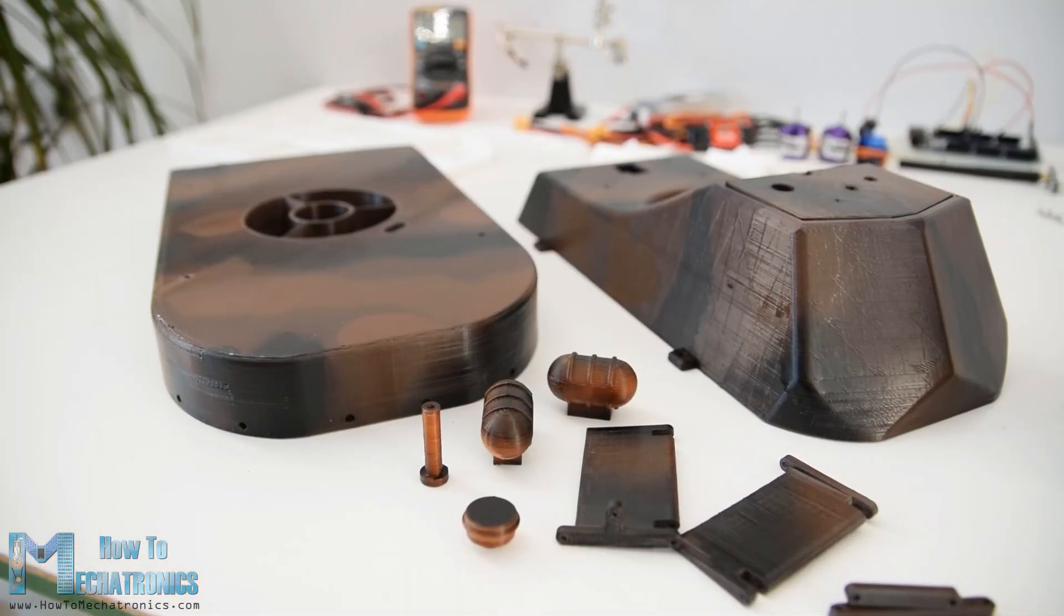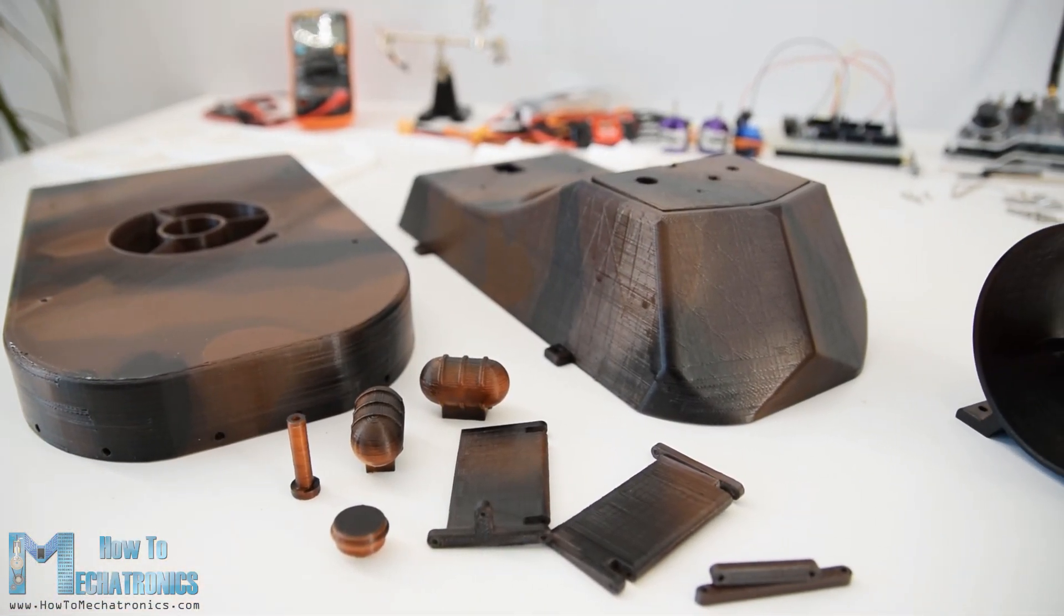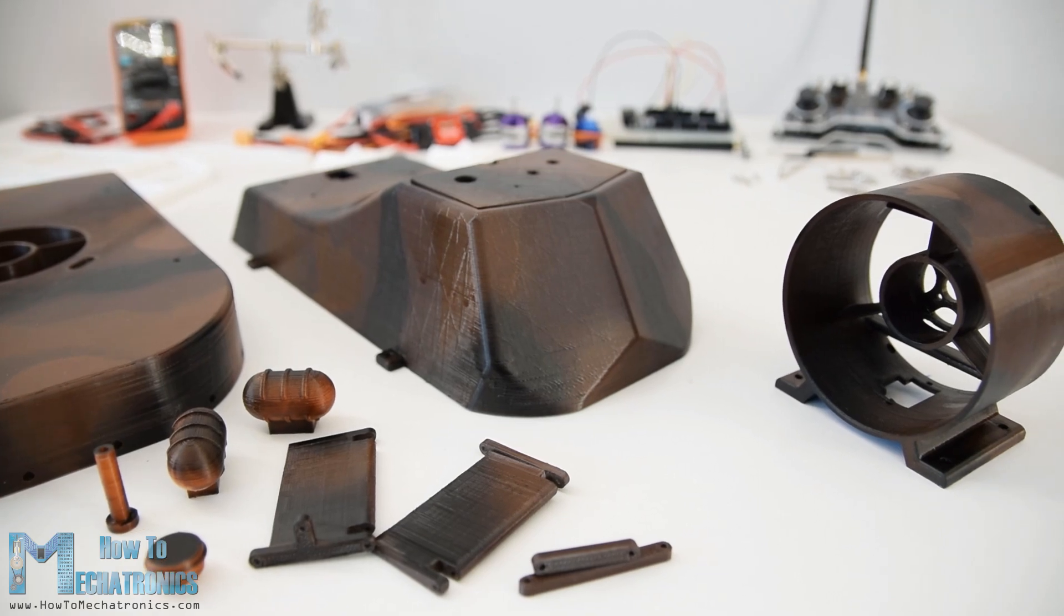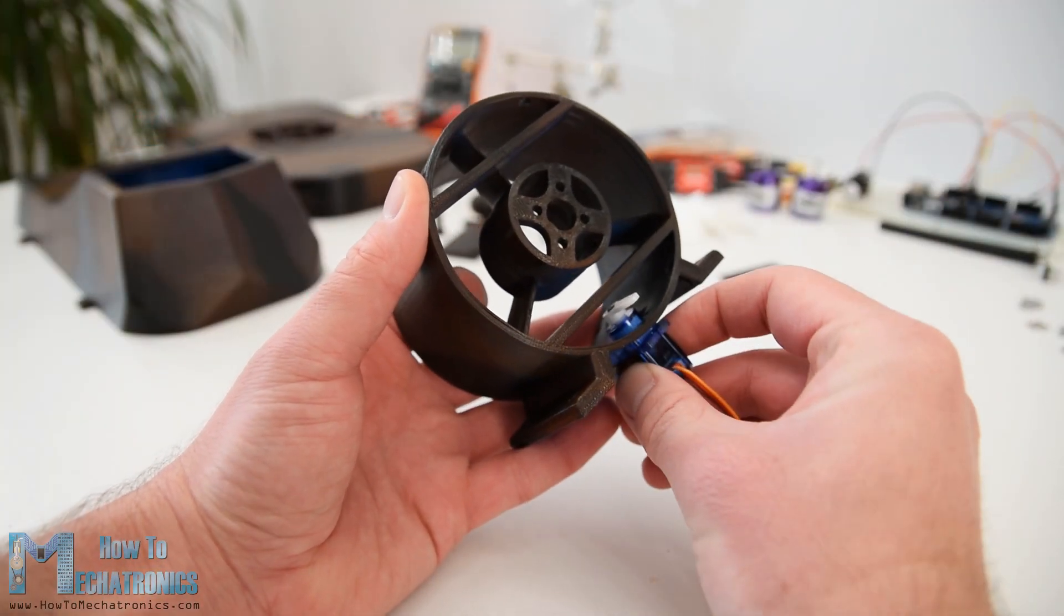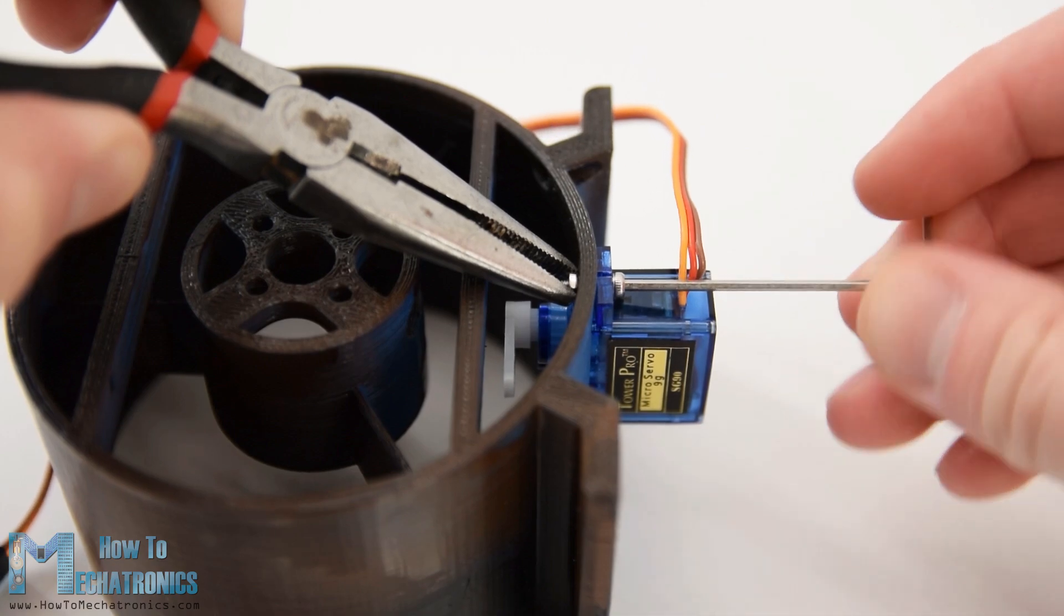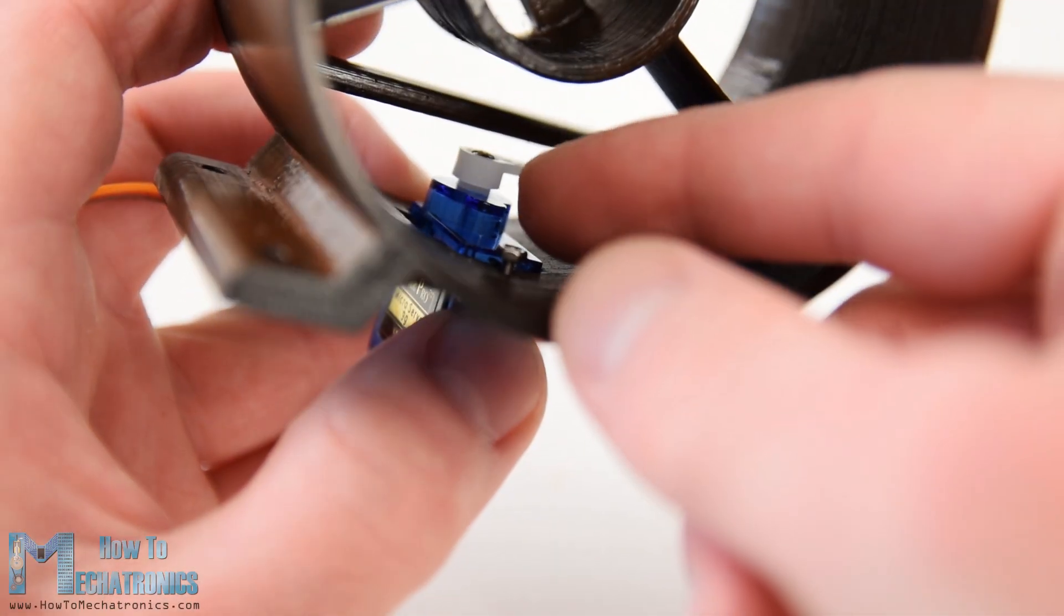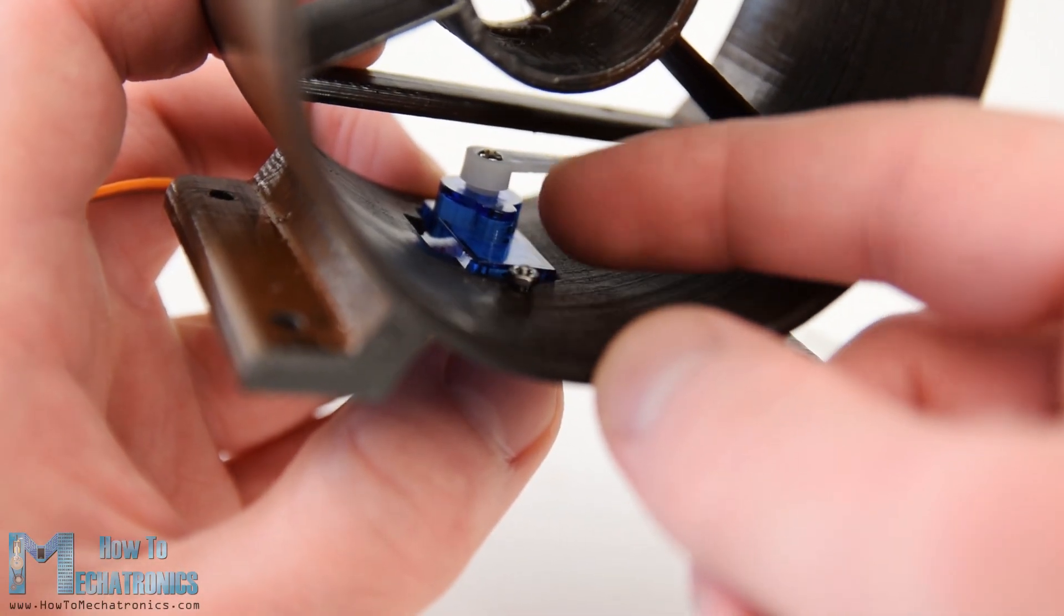I really like how the parts turned out, so once they dried out, I continued with assembling them. I started with installing the servo motor, which controls the rudders onto the thrust blower housing. I secured the servo using two M2 bolts and nuts.